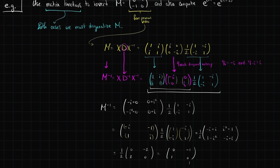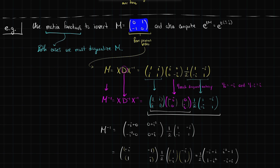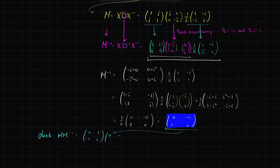So my matrix function tells me that [[0,-1],[1,0]] should be the inverse of M = [[0,1],[-1,0]]. Let's check: M times M inverse. M is [[0,1],[-1,0]], M inverse is [[0,-1],[1,0]]. Multiplying: top-left gives 1, top-right gives 0, bottom-left gives 0, bottom-right gives (-1)² = 1. Here's my identity matrix — so that definitely worked as an inverse.